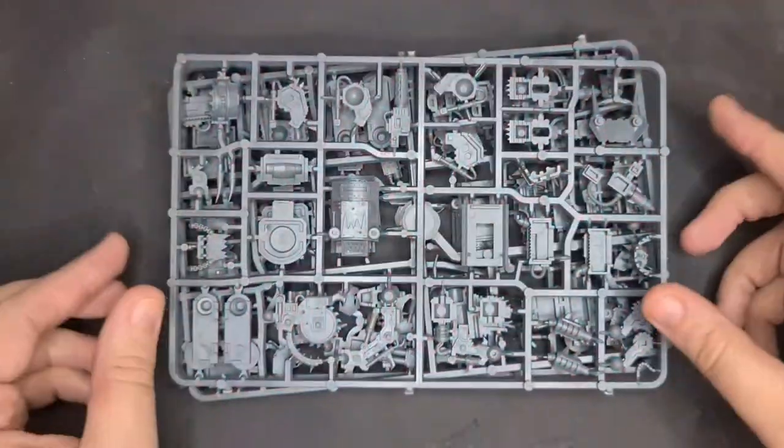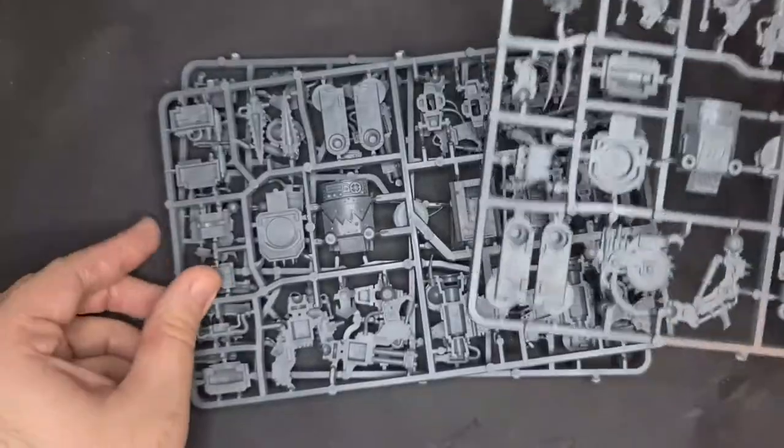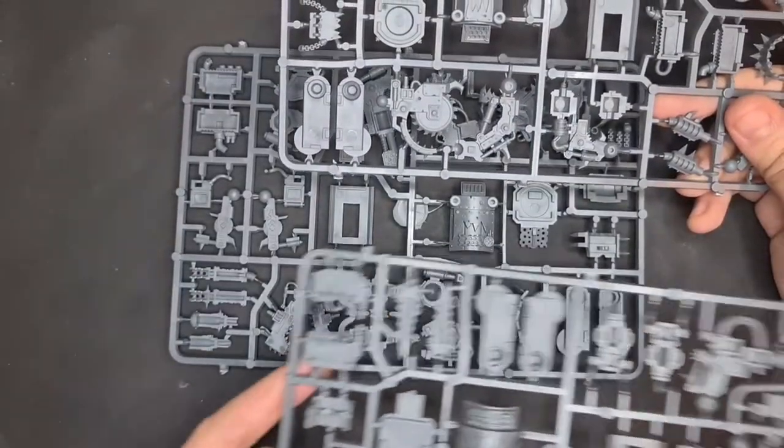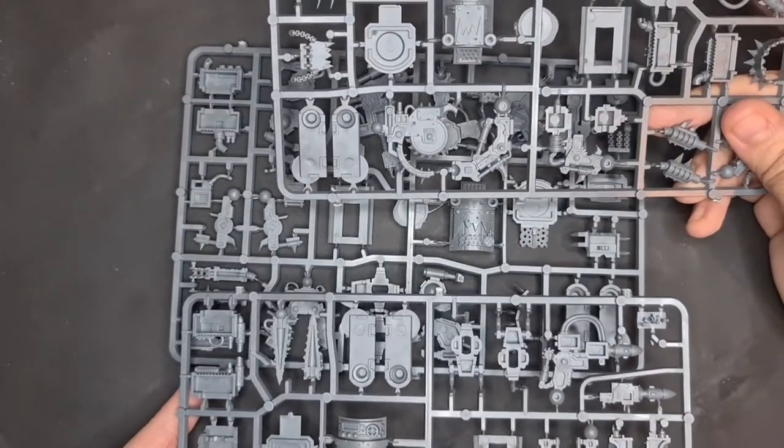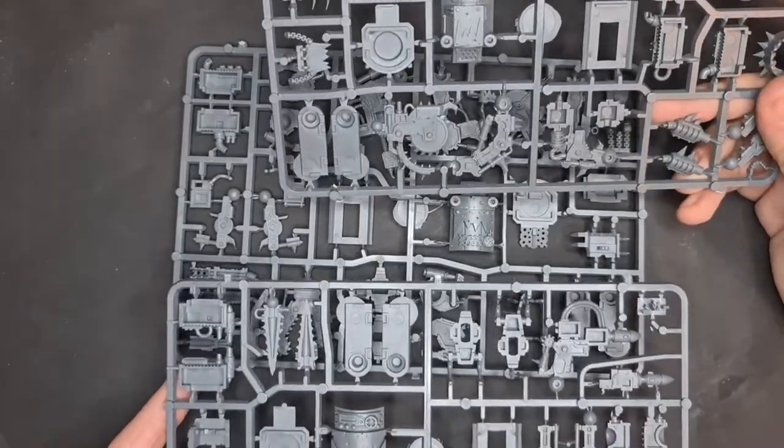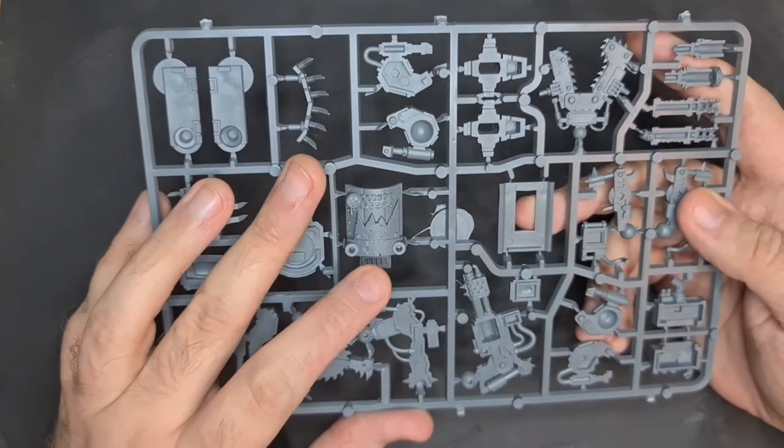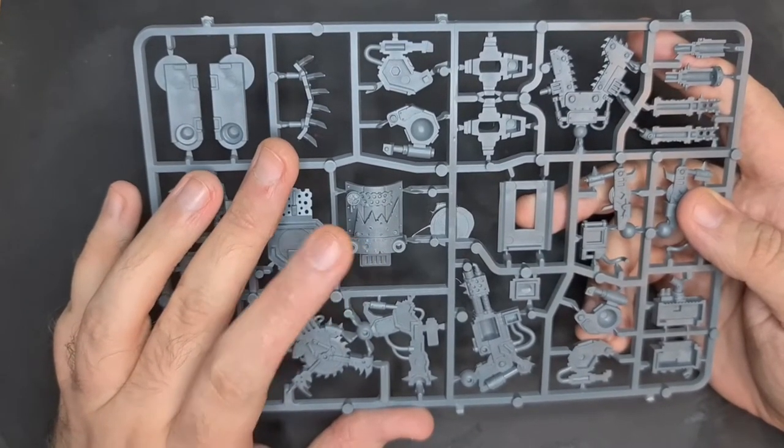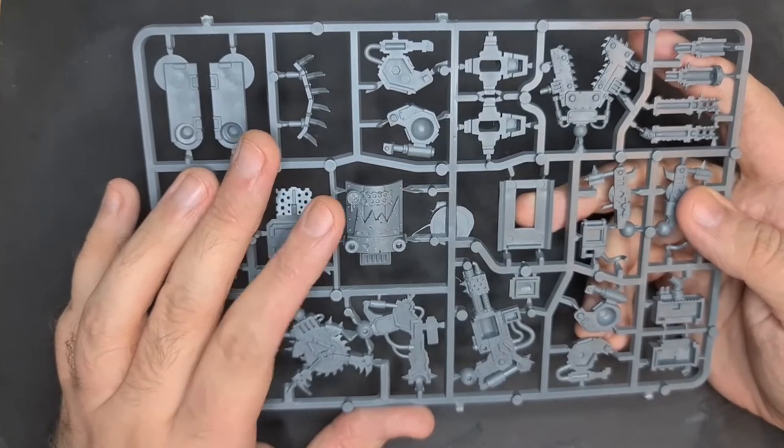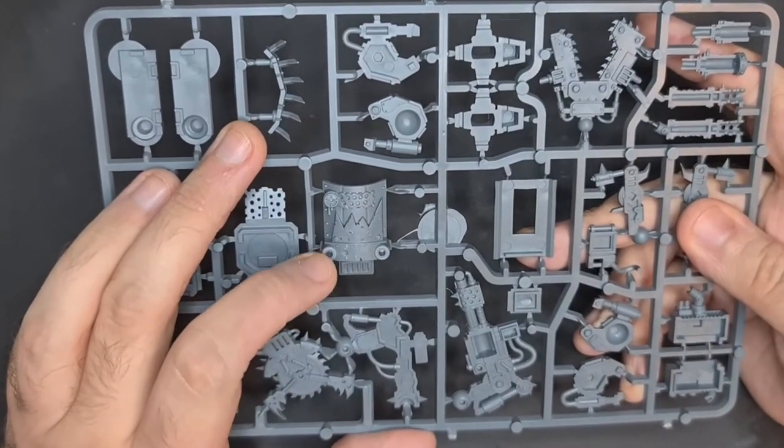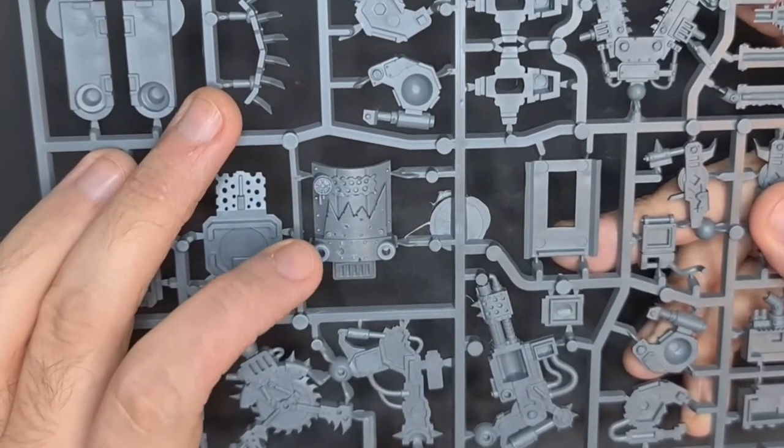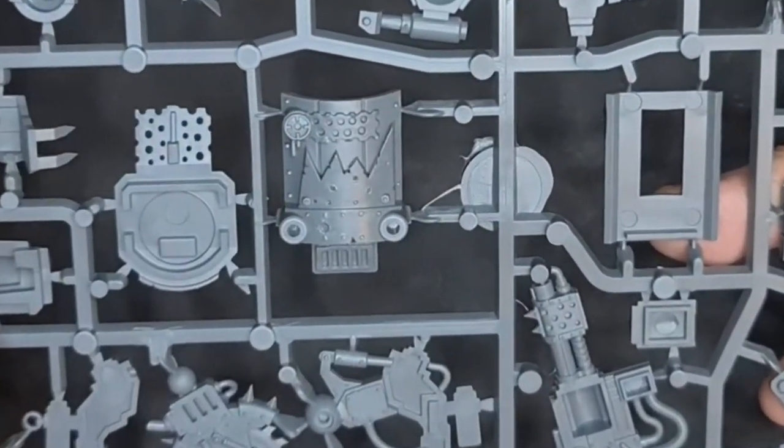So now it's time to go over the sprues. It's quite nice how you've got your body for all the different Killer Cans, and then obviously you've got your weapons and optional extras throughout these different sprues. It's quite nice. This body alone, you've got some battle damage, it looks like some bullet holes or whatnot, targeting system.